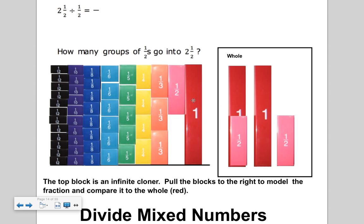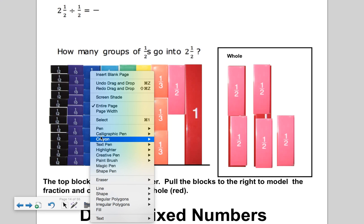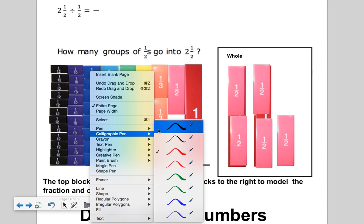Let's see: one group of a half, two groups of a half, three groups of a half, four groups of a half, five groups of one half. So how many halves go into two and one half? The answer is five. Let me write that down: five.